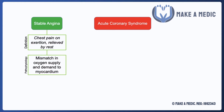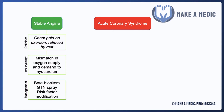The management of stable angina typically involves reducing this mismatch as much as possible. Beta blockers such as bisoprolol are very often used because they reduce the heart rate and hence reduce myocardial oxygen demand. GTN spray can help open up those coronary arteries. Risk factor modification is of course very important, and some patients may also undergo stenting of their coronary arteries to maintain patency and prevent the angina from occurring.